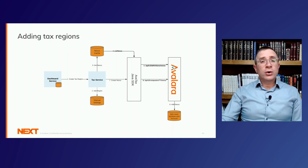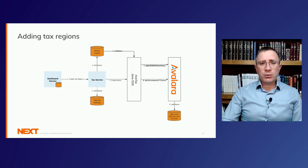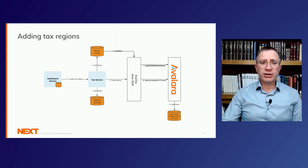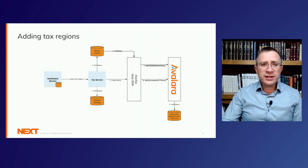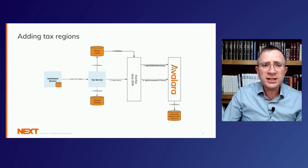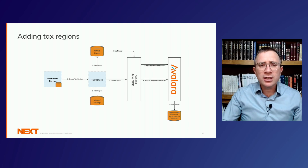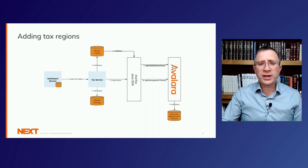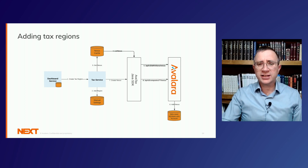When we add or remove a tax region, it's not just adding it in our own system — we also need to call out to Avalara and create a nexus. Before we create a nexus, we need to retrieve the nexus definitions from Avalara via the list nexus endpoint. Once we've done that, we call out to the company nexus endpoint and the nexus is created or removed in Avalara.